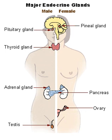Hypofunction of endocrine glands can occur as a result of loss of reserve, hyposecretion, agenesis, atrophy, or active destruction. Hyperfunction can occur as a result of hypersecretion, loss of suppression, hyperplastic or neoplastic change, or hyperstimulation. Endocrinopathies are classified as primary, secondary, or tertiary.